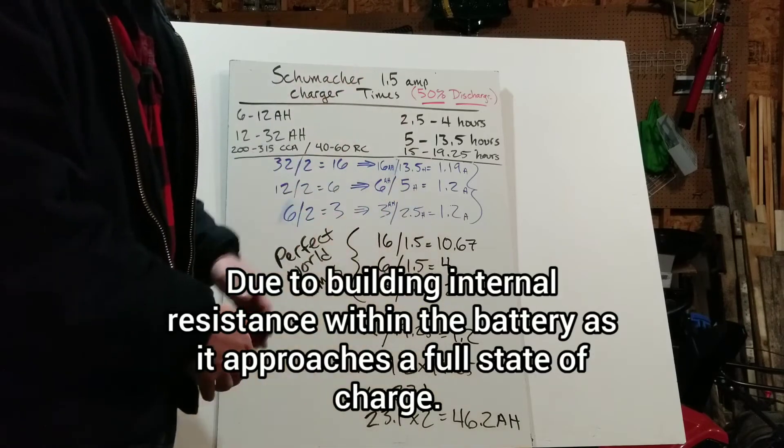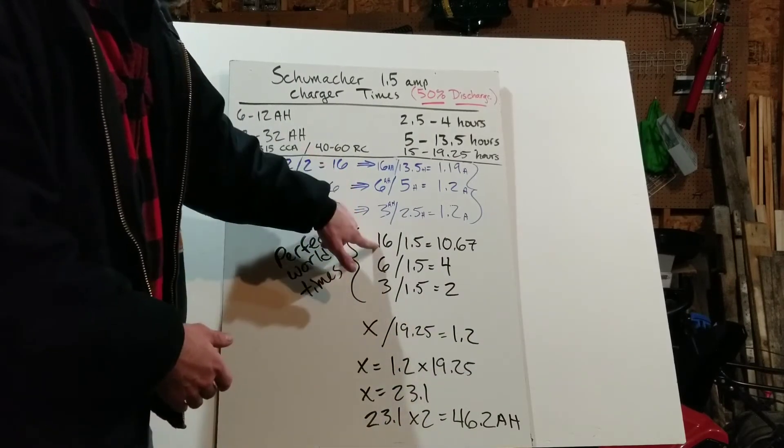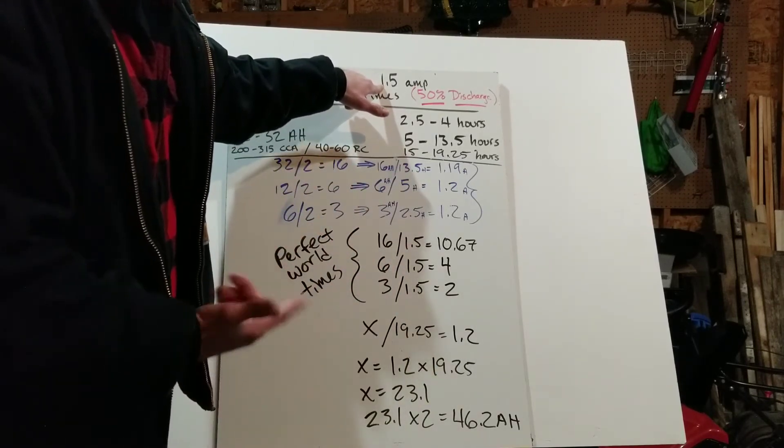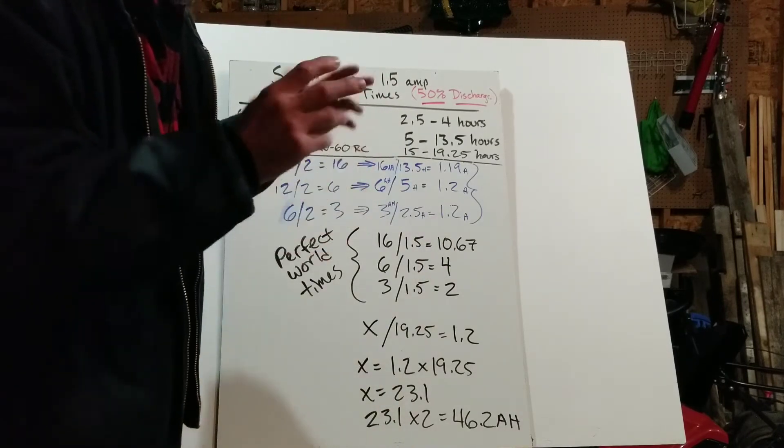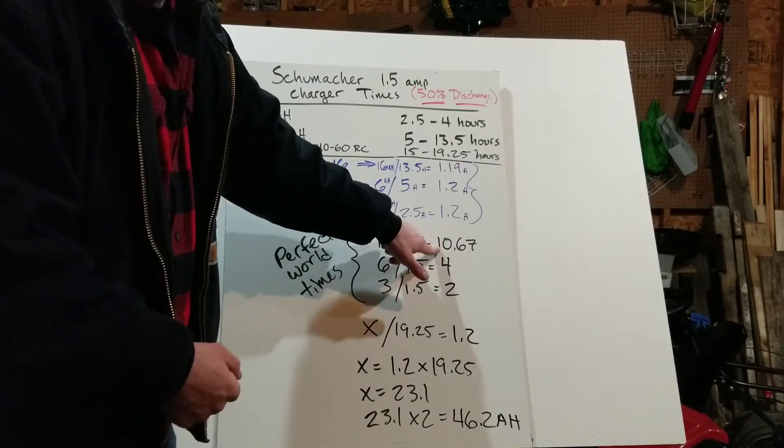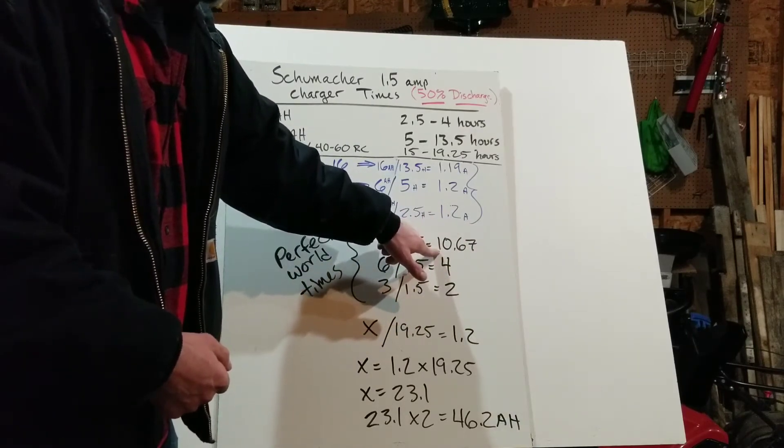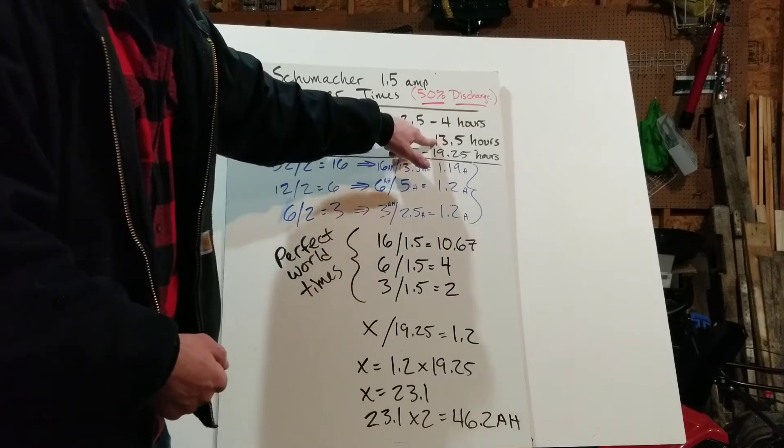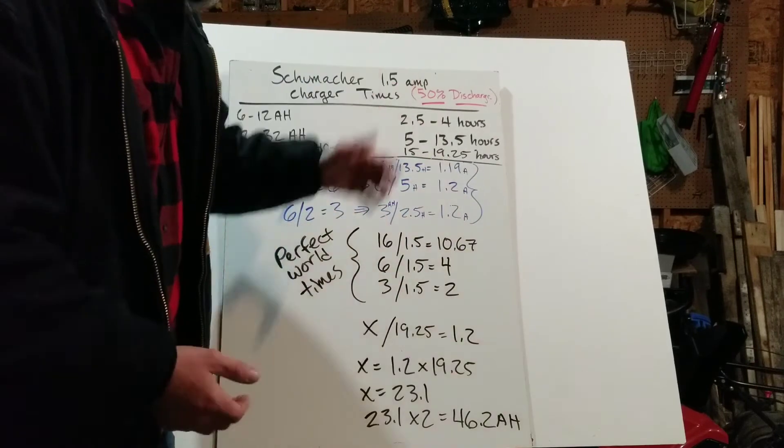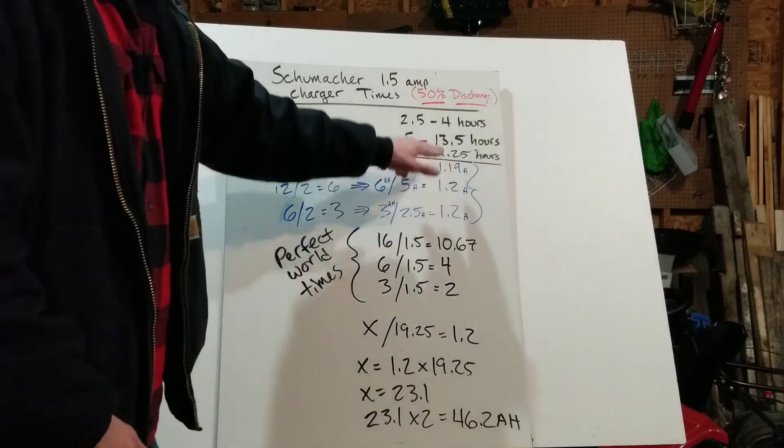So that's what drags us out because in an ideal world, the 16 amp hours that we need to replace here, if we divided it by 1.5, the charger, because the charger should be able to put in 1.5 amp hours, like replenish 1.5 amp hours per hour, 16 divided by 1.5 gives us 10.67. In a perfect world, this should have only taken 10.67 hours and not 13.5 hours. So this is 79% of this. So they all relatively came out to 79, 80, 80%. So these are the numbers that I'm working with.